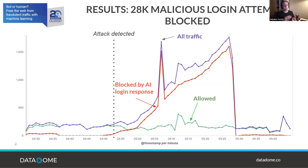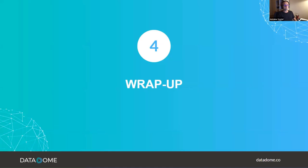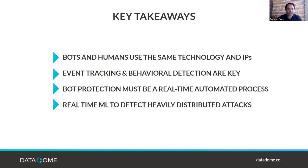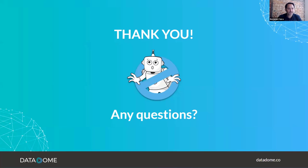Thanks to this approach, we were able to quickly detect an abnormal change at the whole website scale and generate several blocking patterns to block the malicious part of the traffic. To wrap up: today bots and humans use the same technologies and IP addresses, so behavioral detection is key. Bot protection must be done in real time using automated processes because attacks move very fast. We must leverage supervised, unsupervised, and semi-supervised machine learning to detect evenly distributed attacks that can change shape in real time.